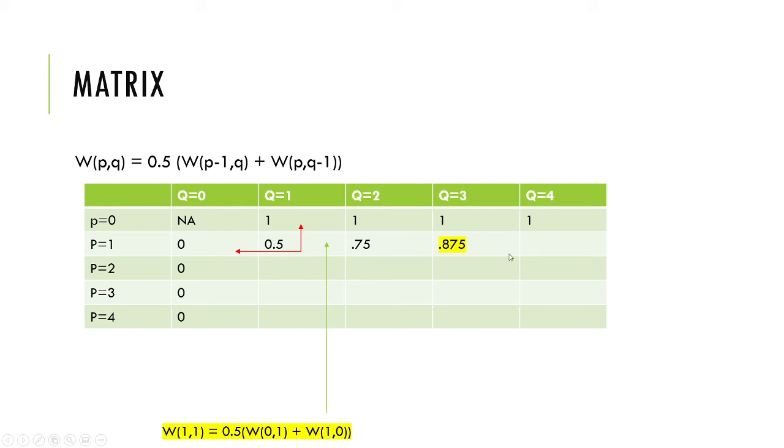In the problem you are basically given the example where A has one game to win and B has three games to win. What is the probability that A will eventually win this series? It's 0.875, and in the book it's 7 by 8, which is 0.875.